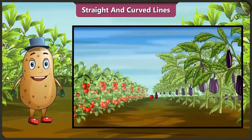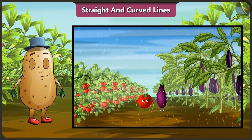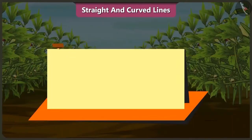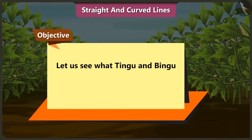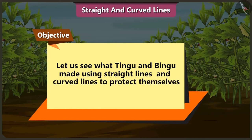Friends, Tingu and Bingu have gone for a walk without taking the umbrella. Suddenly it starts raining. Let's look at what Tingu and Bingu made using straight and curved lines to protect themselves from rain.